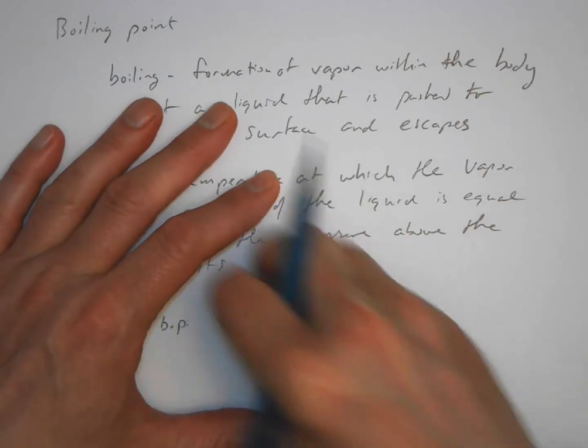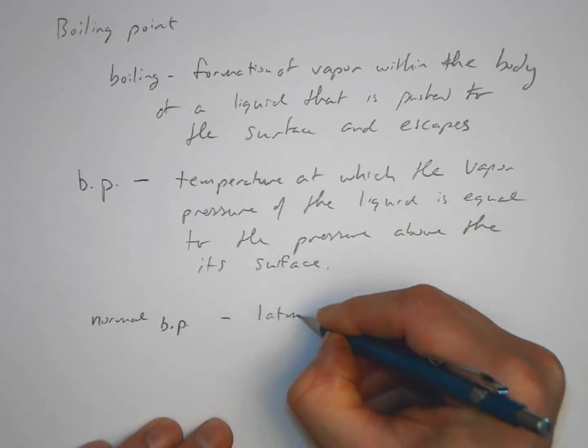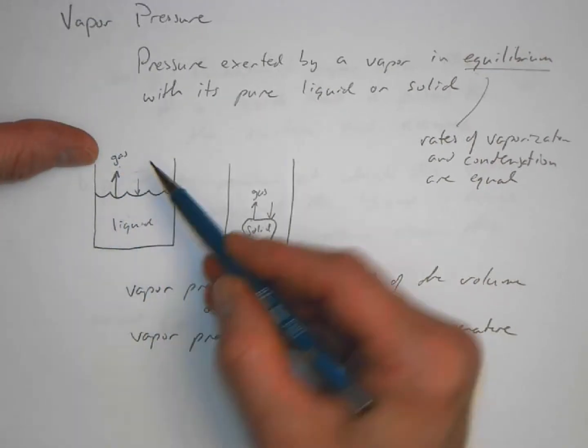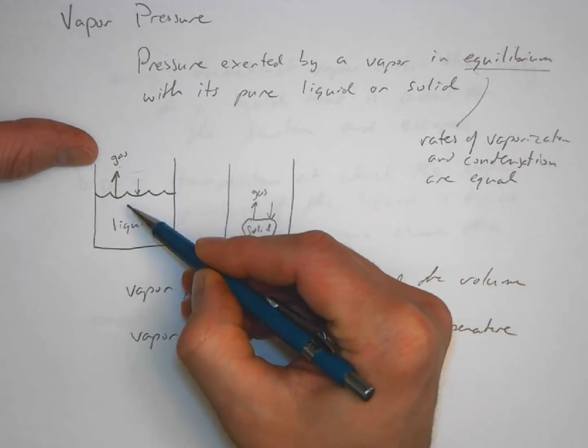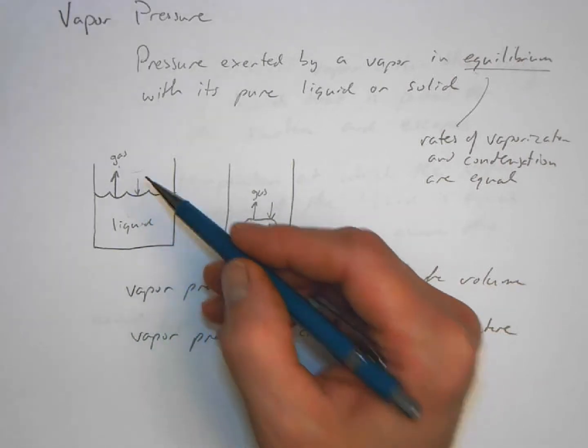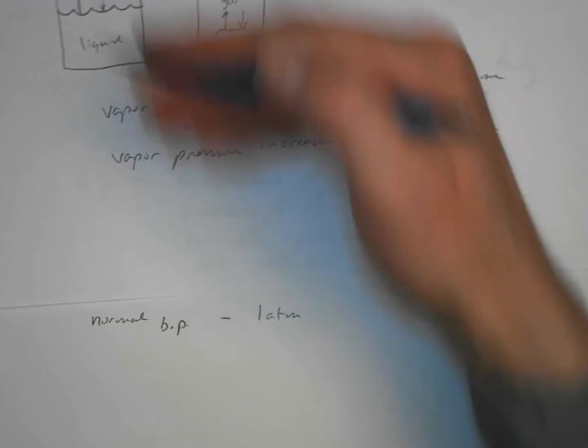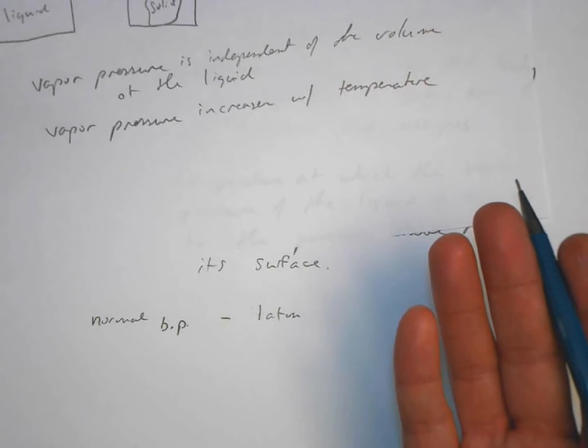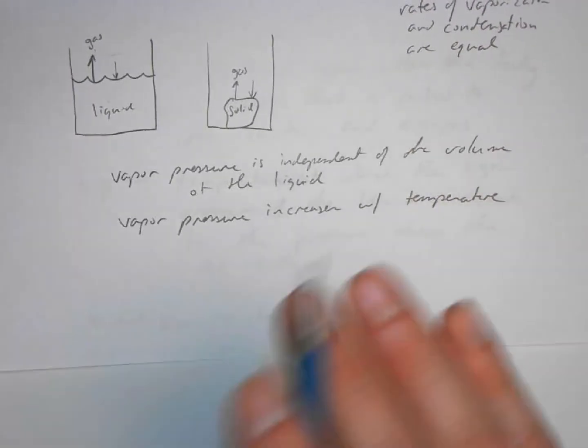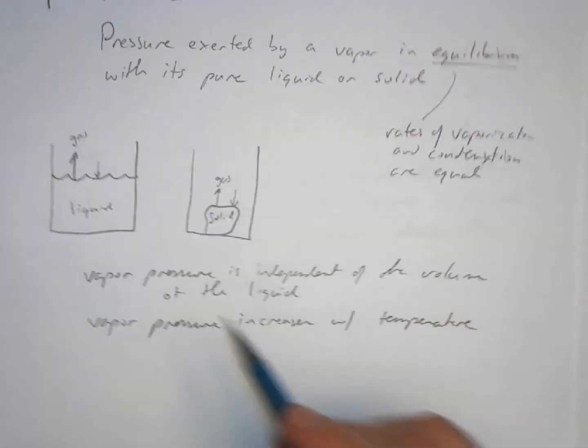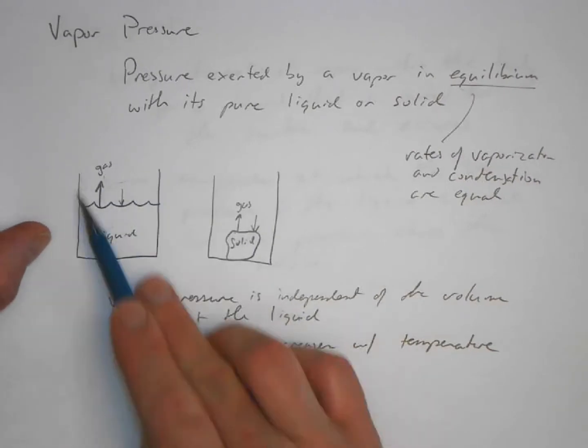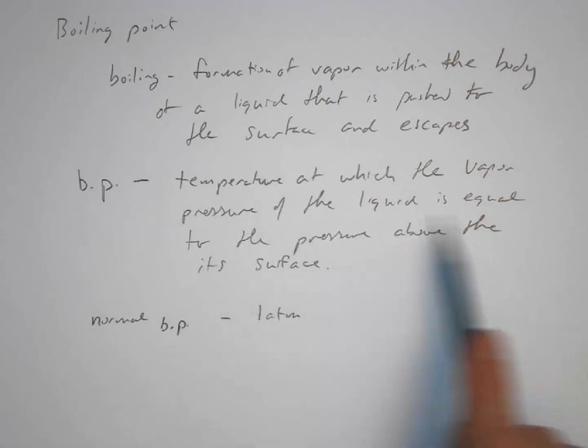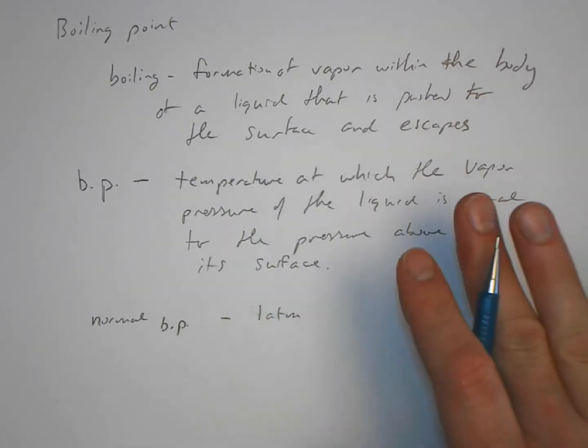And you can imagine that if we have varying amounts of pressure of the gas that's above this liquid, if we raise this pressure we could see that the boiling point would have to go up. If we were to lower the pressure above this liquid, the temperature at which the vapor pressure is equal to the pressure above its surface might go down.